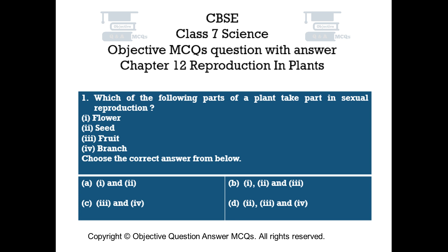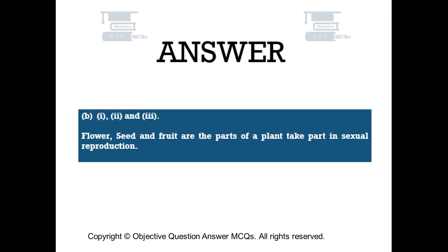The right answer is Option B — 1, 2 and 3. Flower, seed and fruit are the parts of a plant that take part in sexual reproduction.